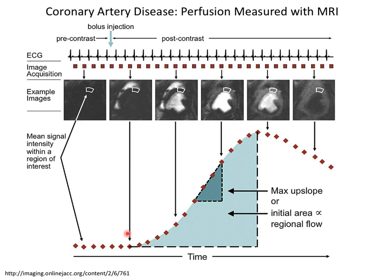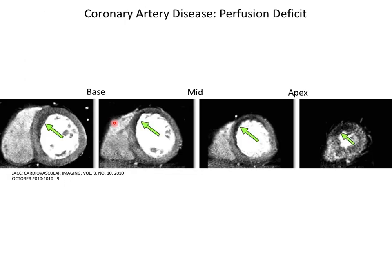Ideally you'd like to know flow in milliliters per gram per minute. At rest, baseline flow is about 1 ml per gram per minute through a chunk of cardiac tissue. When you exercise, it goes up to about 5 — a fivefold increase. That's why if you exercise and flow only goes up to 2 because of a stenosis, you feel it — the tissue isn't getting the oxygen it demands. That's called ischemia.